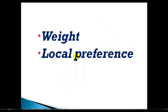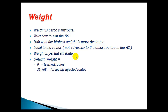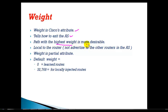We'll see how it works with some basic examples — first starting with weight, then moving to local preference. Most things are common between them except a few differences. Weight is a Cisco proprietary attribute that tells how to exit the autonomous system. The path with the highest weight is more desirable. It is local to the router, which I'll explain in detail.